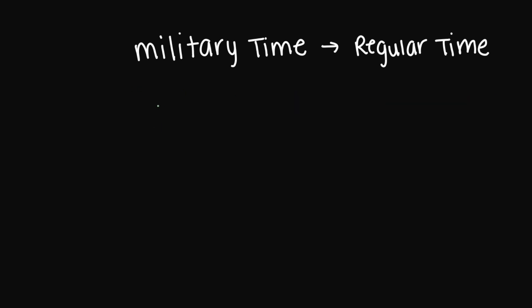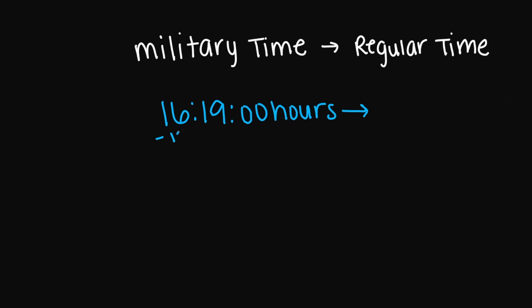What about 16:19:00 hours? Regular time — I'm going to subtract 12, and this is going to give me 4. So my regular time is going to be 4:19 p.m.